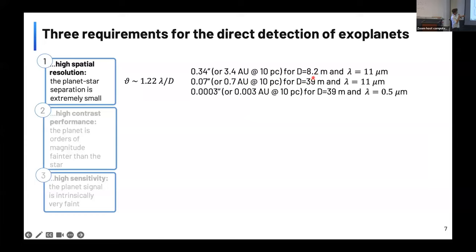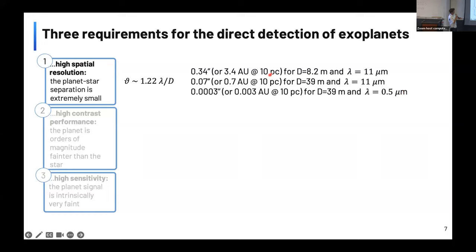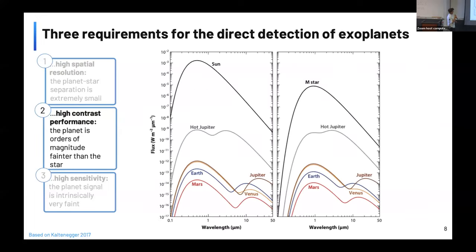You can translate the Rayleigh criterion into useful physical units in AU for your favorite telescopes. Being European, I use D = 8.2m for the VLT and D = 39m for the upcoming ELT, putting 11 microns as wavelength — the peak of Earth's intrinsic thermal emission. This shows that with current telescopes we cannot reach separations of order one Earth orbital period around a sun-like star even at only 10 parsec.